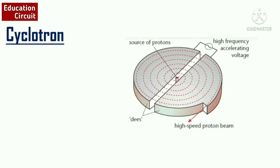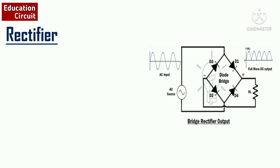Next is the cyclotron. A cyclotron is used to accelerate the speed of particles like protons and electrons. You can see the source of protons in the center and the high-speed proton beam. Next is the rectifier. A rectifier is used to convert alternating current — used in our circuit boards and electrical devices — into direct current. In the AC waveform it keeps changing, but in DC all cycles are positive. So a rectifier rectifies alternating current into DC current.